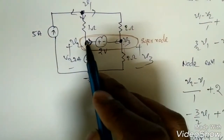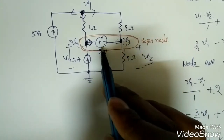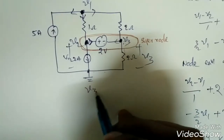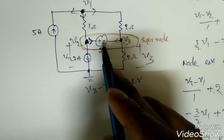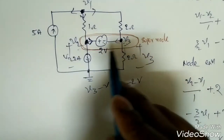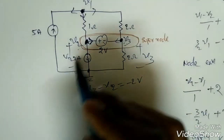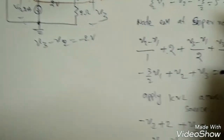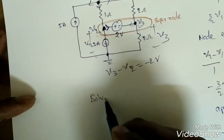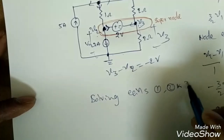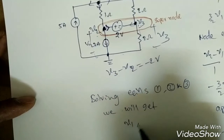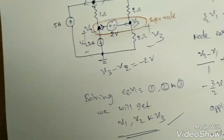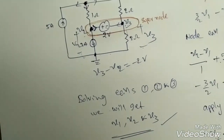We have three unknowns but only two equations, so we need one more. We apply KVL across the voltage source: minus V2 plus 2 plus V3 equals 0, which gives V2 minus V3 equals 2. This is equation 3. With all three equations, we can solve for V1, V2, and V3. This completes the nodal analysis and super node concept. In the next lecture we will see problems on mesh analysis and nodal analysis.